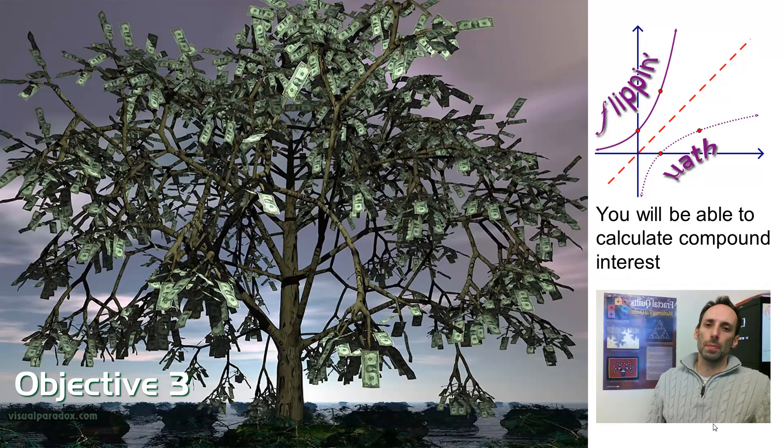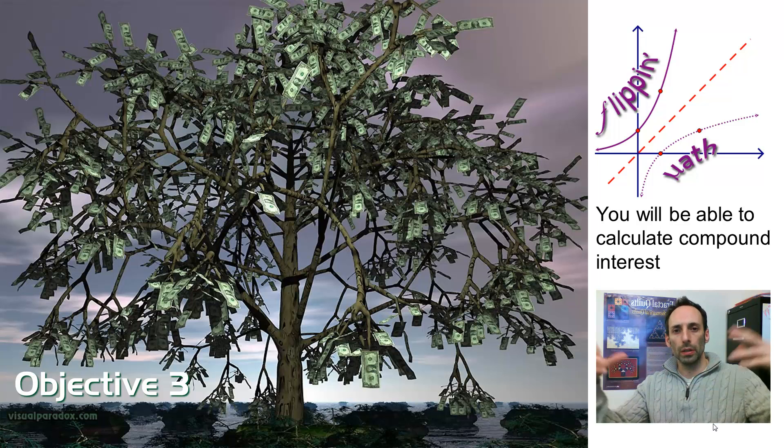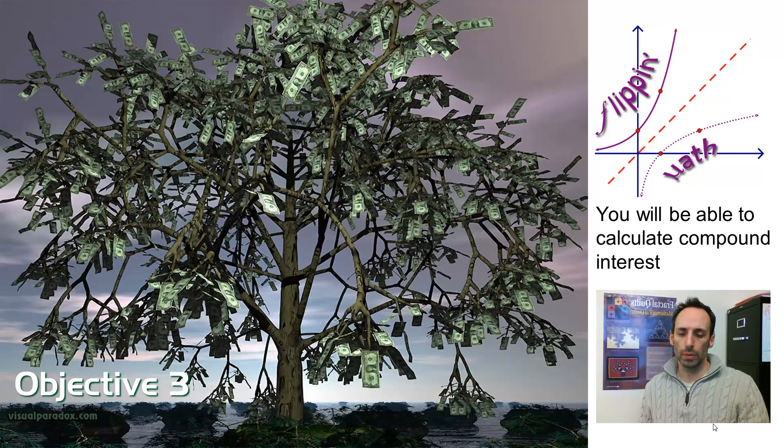Alright, so this objective is about money. It's about interest, specifically computing compound interest. And whenever you make some sort of investment, you get some interest, you're making your money grow, which is pretty much what the picture is all about there.